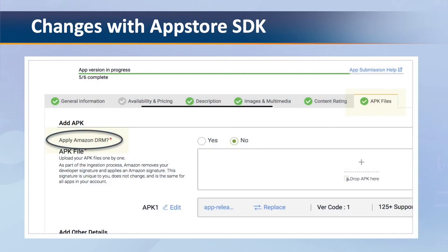Previously, when you uploaded Android APKs into the Amazon App Store, you had the option to select yes or no for apply Amazon DRM on the APK files tab. With the new App Store SDK, Amazon no longer adds this wrapper around your APK after you submit it.